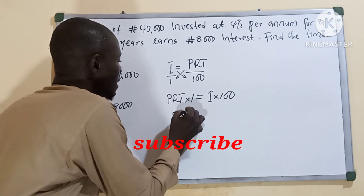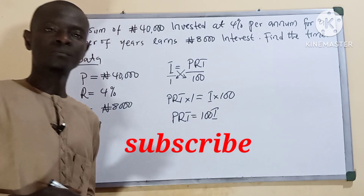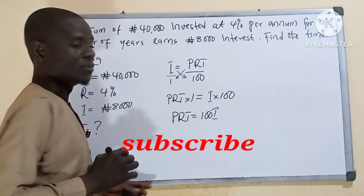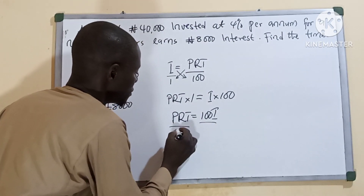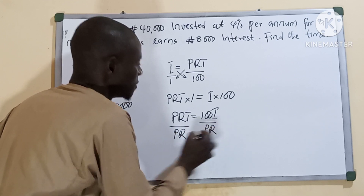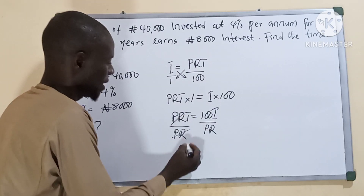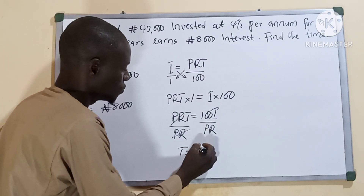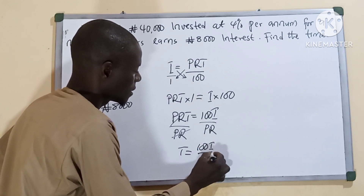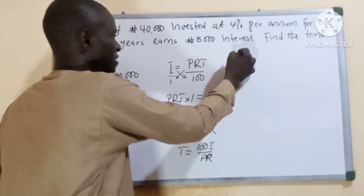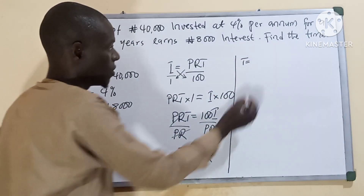Here we have P times R times T equals 100 times I. Making T the subject, we divide both sides by P times R. So T equals 100I all over PR.